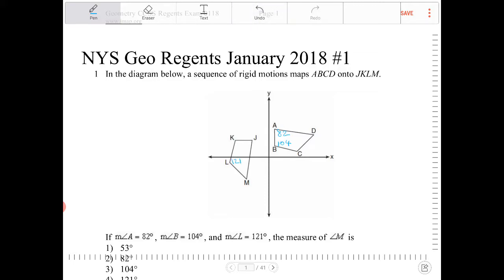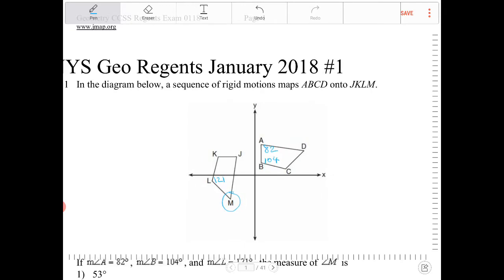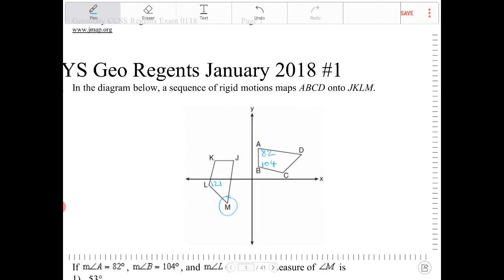The measure of angle M is... okay, so we're trying to look for, we're looking for angle M here. You have to understand when a rigid motion is performed and the original image